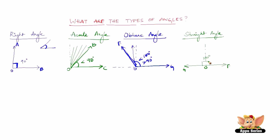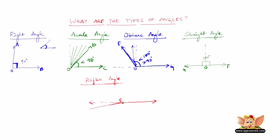This is the straight angle, which is exactly equal to 180 degrees. The final kind of angle is called a reflex angle. A reflex angle is an angle which is greater than 180 degrees. We have the 180-degree reference point here, so any line beyond that — like this, or this, or this — is a reflex angle. It is measured from the horizontal to the inclined line as usual.